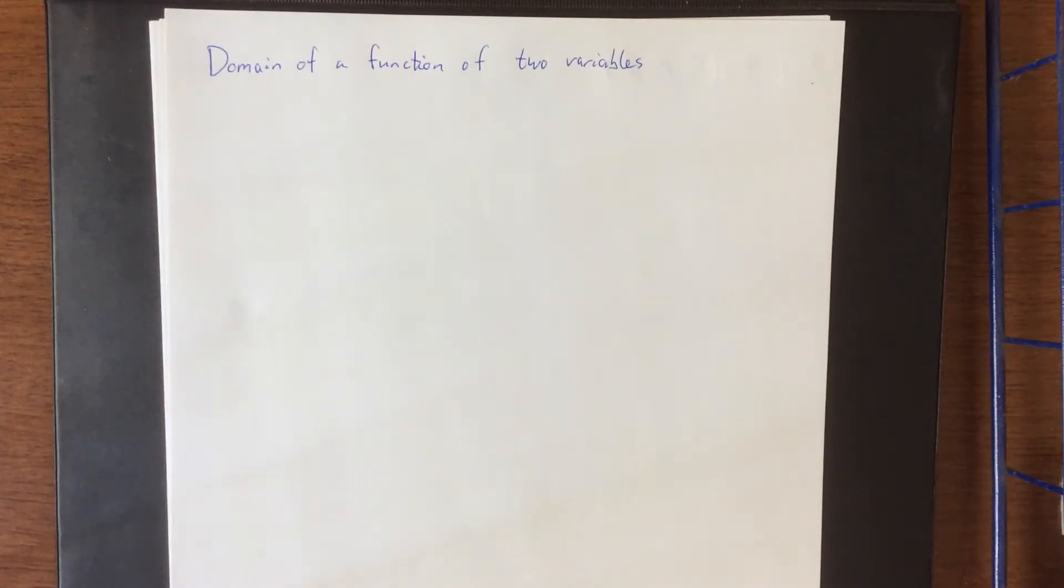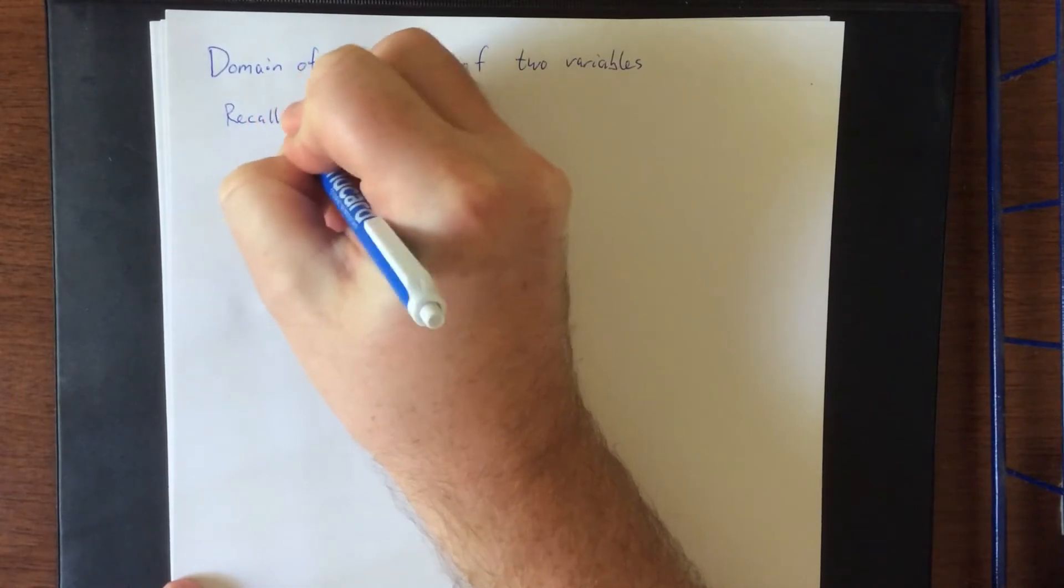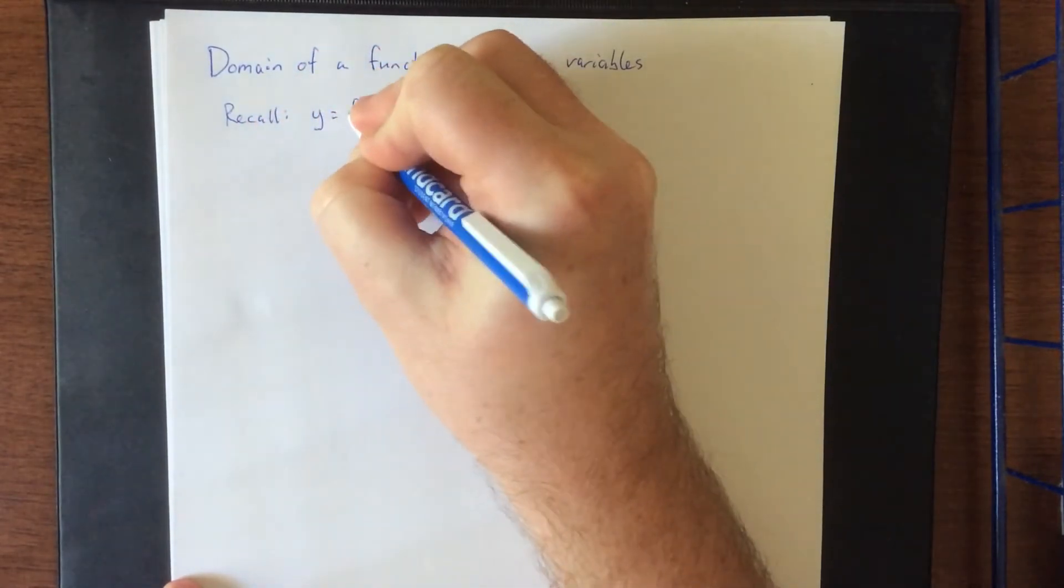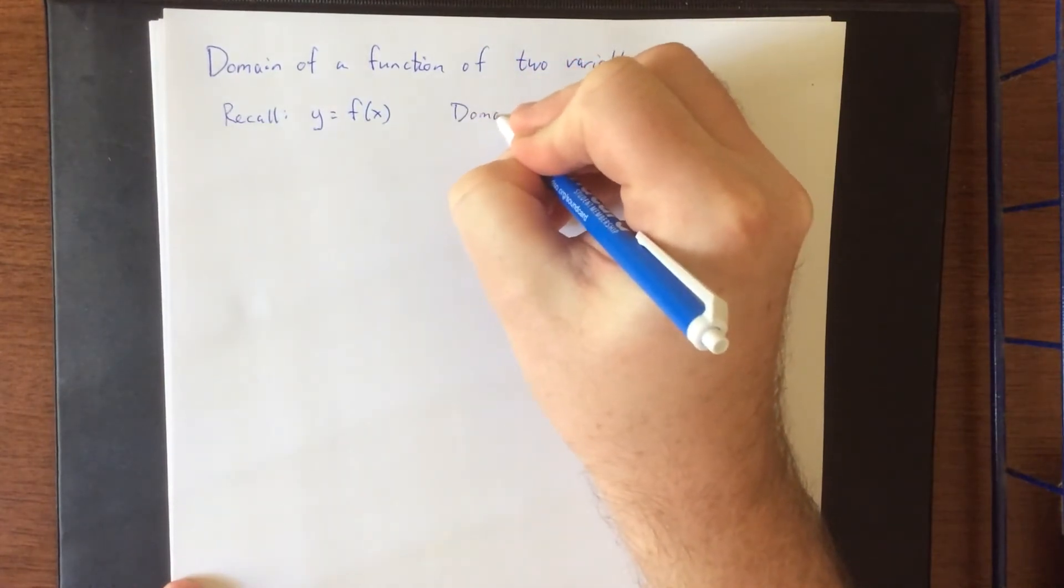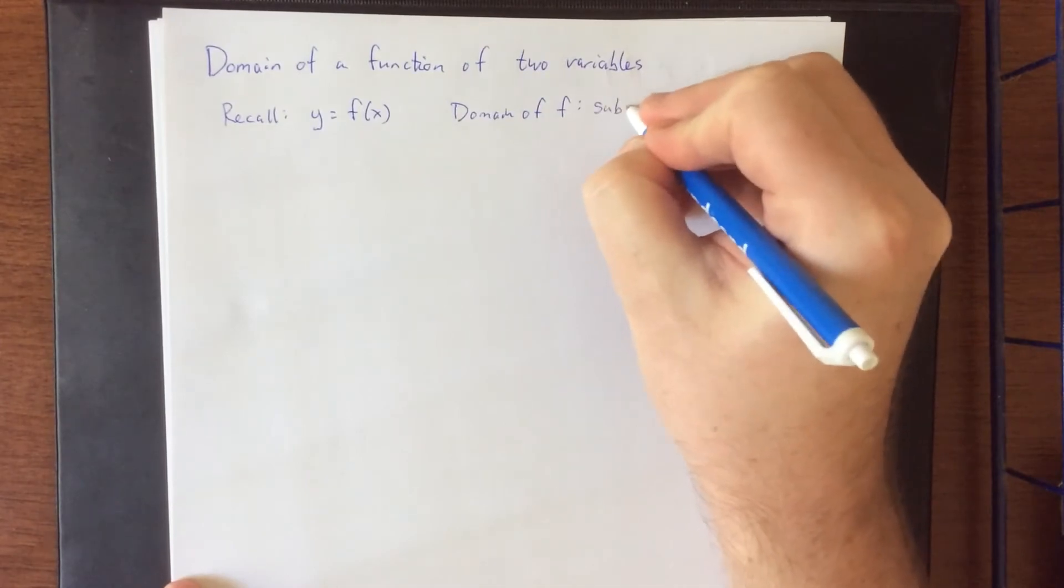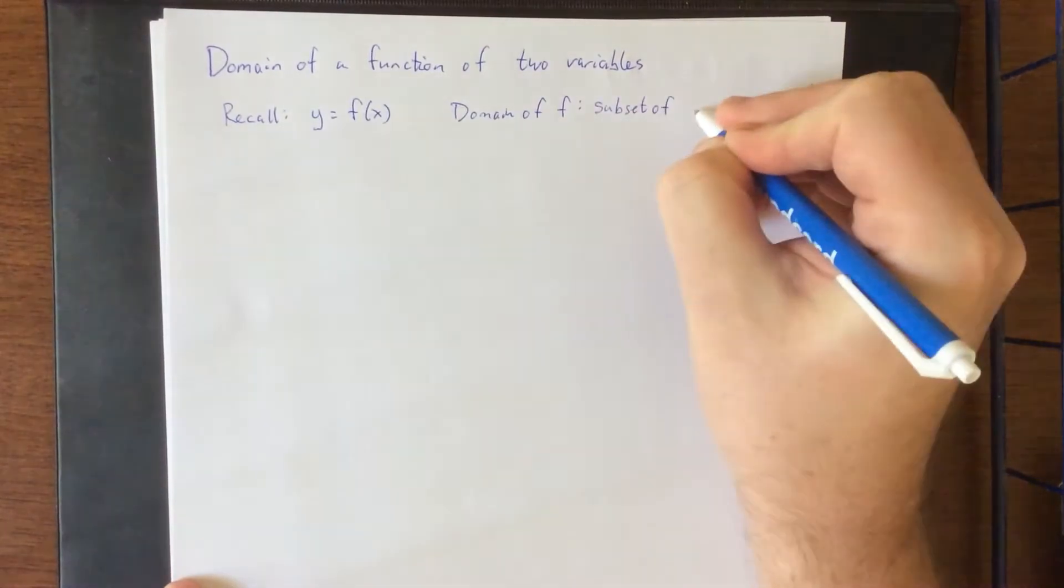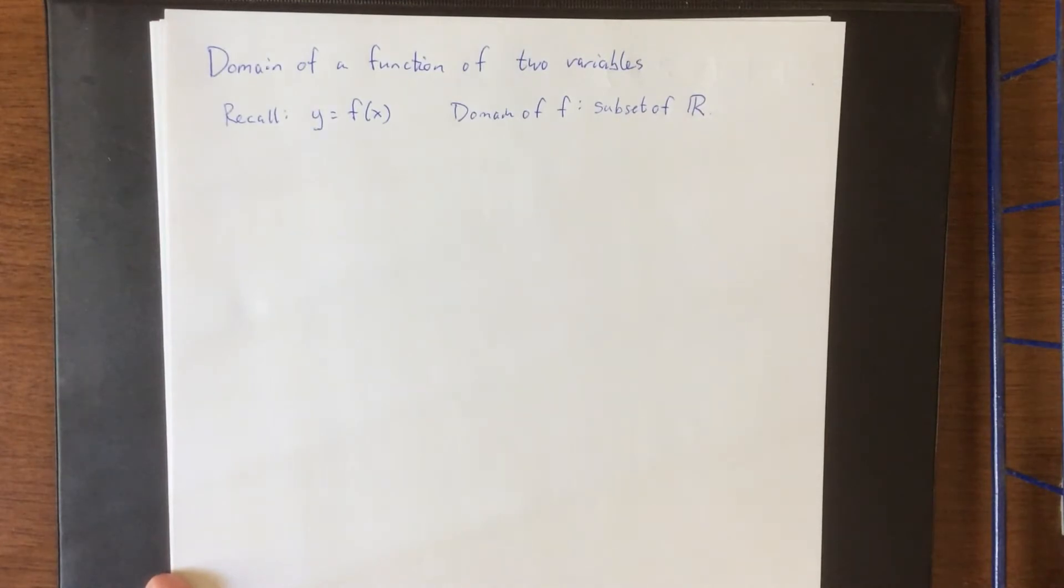As is typical when you talk about functions, one of the things to talk about in terms of functions would be the domain of a function. So as a reminder, when we are dealing with a function of one variable, y equals f(x), the domain of f would be a subset of the x-axis, and the x-axis represents all real numbers.